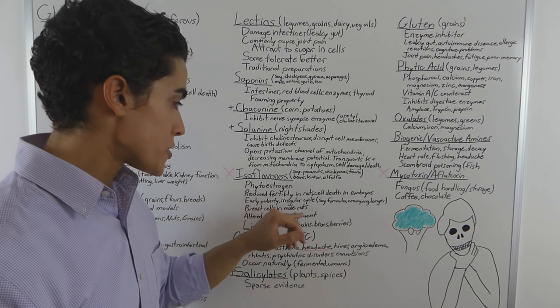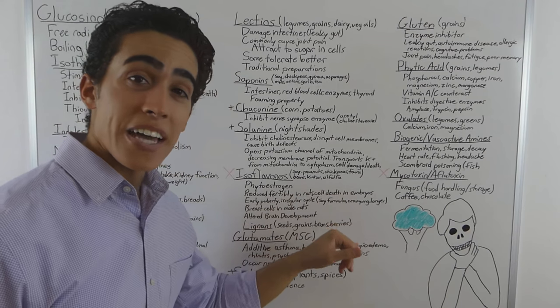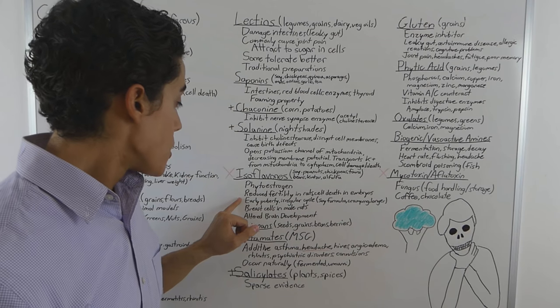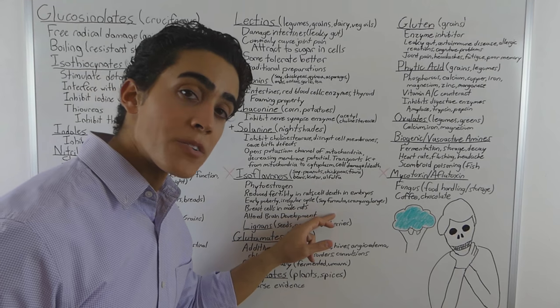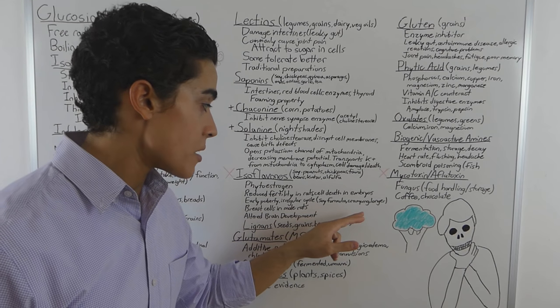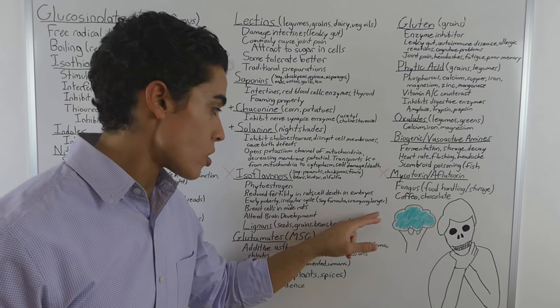The main concern is the phytoestrogens in these foods. It's associated with reduced fertility in rats. Cell death in embryos. Early puberty in women, also irregular cycle. And women fed a soy formula had menstrual cramping as well as longer periods.